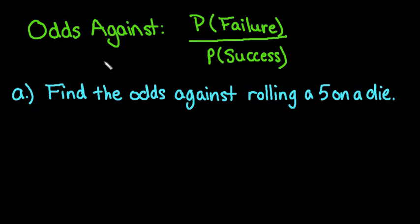Hi! For this video, I want to talk to you about how to find the odds against something happening. The odds against is always the probability of failure divided by the probability of success. So it's how likely you are to fail, basically.